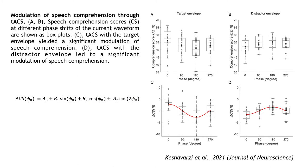TACS with the distractor envelope led to a significant modulation as well, but with a different phase dependence. The highest score occurred at a phase shift of 180 degrees and the lowest at a phase shift of zero. We also found that the modulation caused by TACS with the target envelope is stronger than that of the distractor envelope.